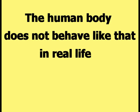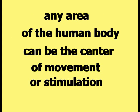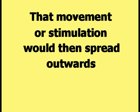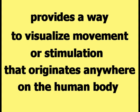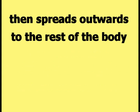The human body does not behave like that in real life. In real life, any area of the human body can be the center of movement or stimulation, which then spreads outwards in all directions. The fertilizing egg version provides a way to visualize movement or stimulation that originates anywhere on the human body and then spreads outwards.